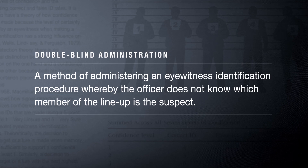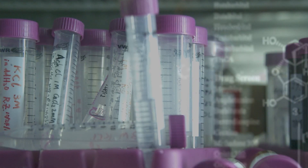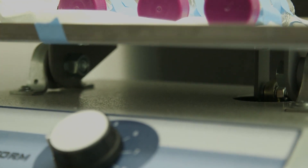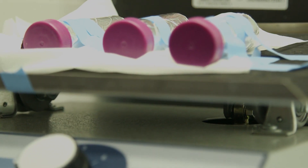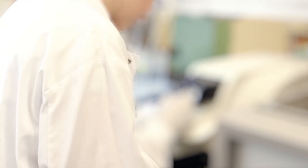Double-blind administration is recommended not because we don't trust law enforcement, but because they're human beings. At the end of the day, we tend to see what it is that we want to see. The FDA, for example, requires double-blind administration in their drug trials — not because we don't trust doctors and nurses to run those trials accurately, but because they can be influenced by their expectations and what they want the outcome to be. Law enforcement are the same. Double-blind administration protects the witness and protects law enforcement from any accusations that there was influence in the outcome.